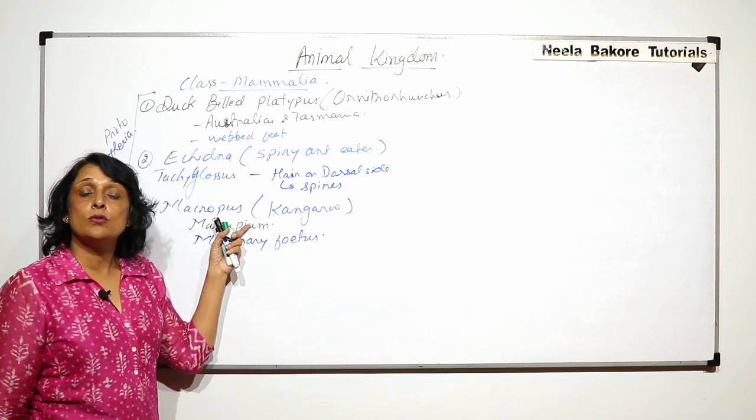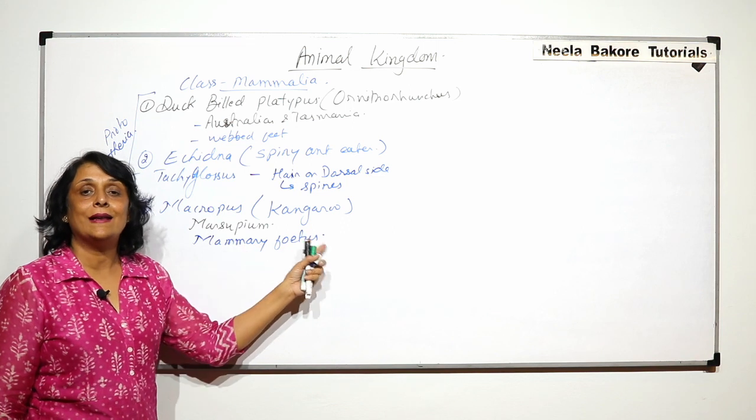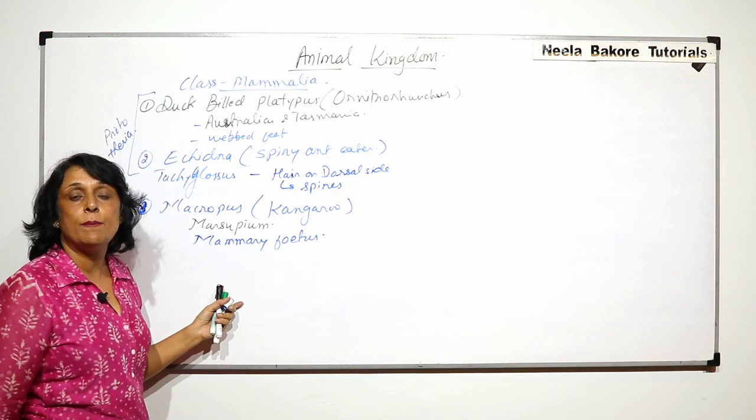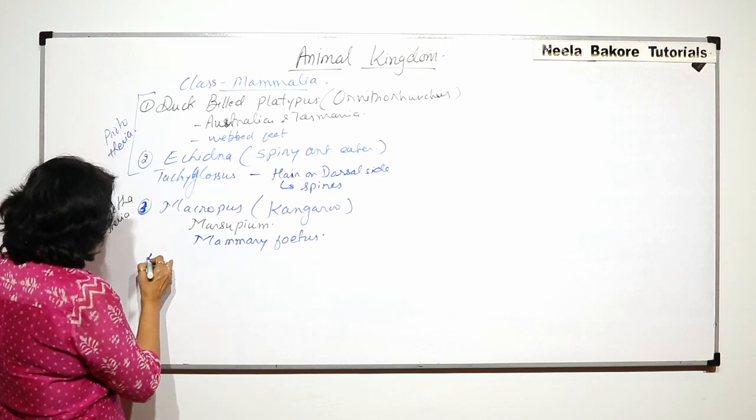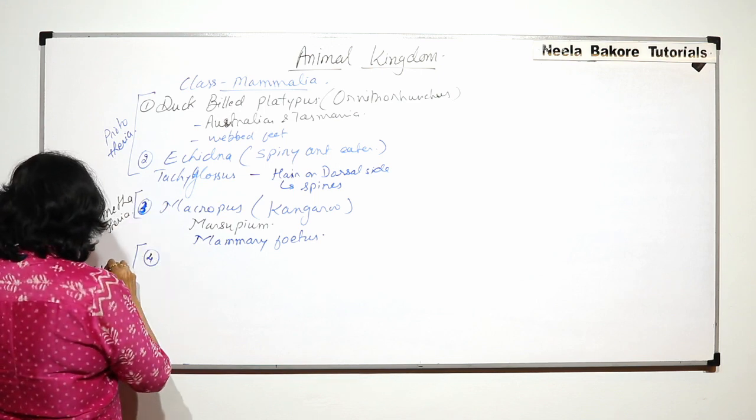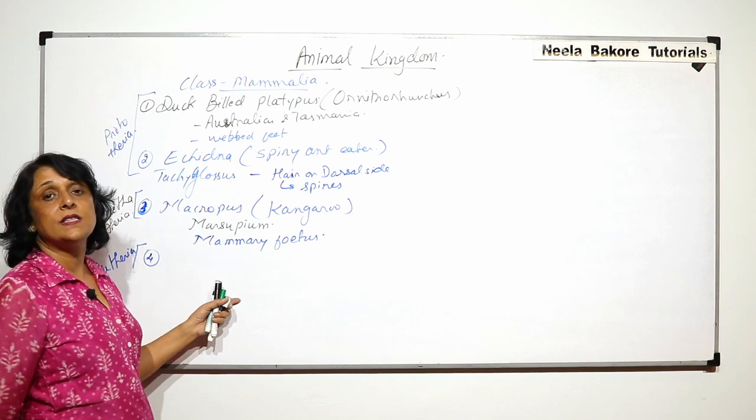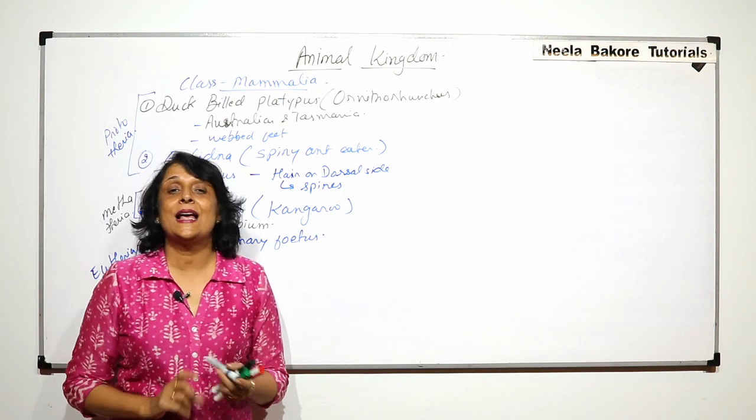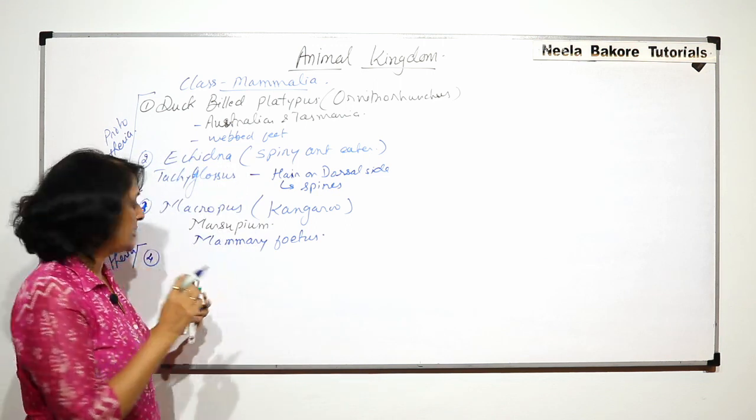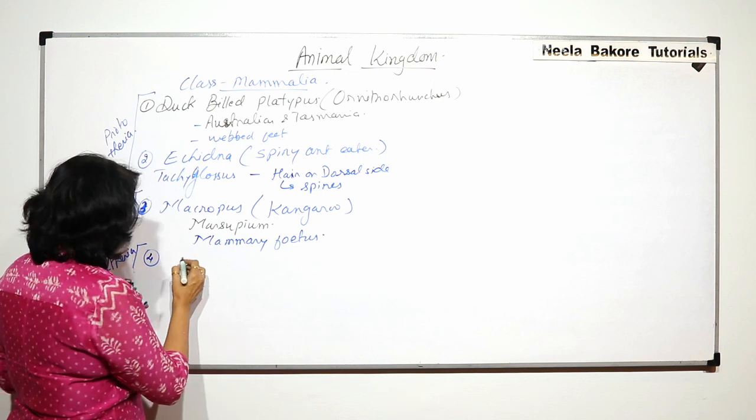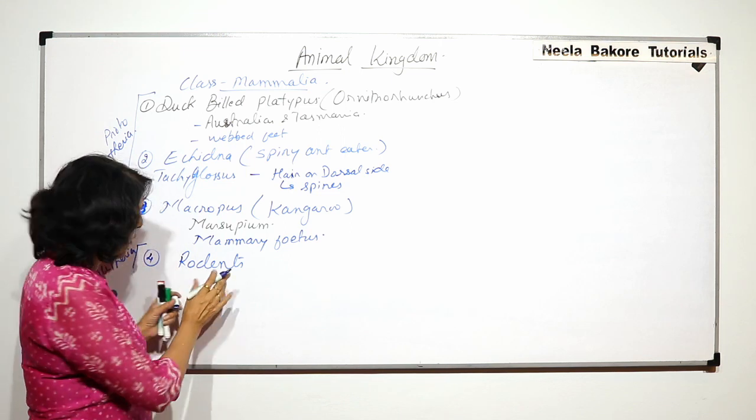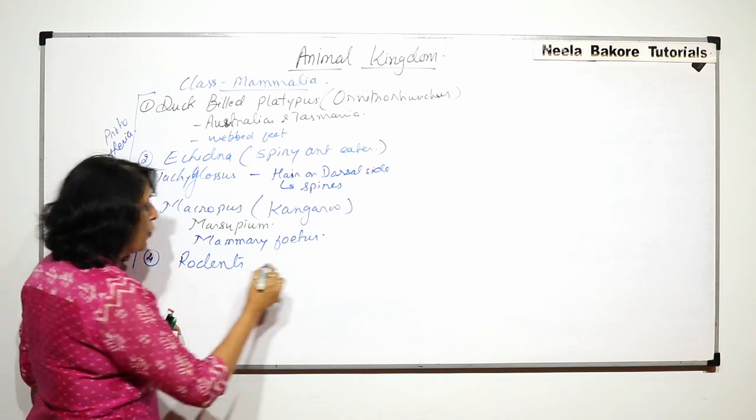So kangaroos are also found in Australia and Tasmania, the same region as duck-billed platypus. This is one important example of Metatheria. The next examples, from the fourth example onward, all examples are of Eutheria. Eutherians are the true placental mammals. In this we will take some groups and see some interesting examples.